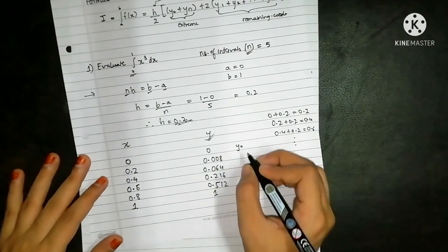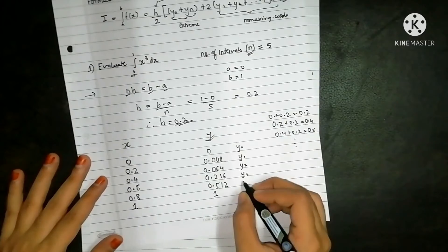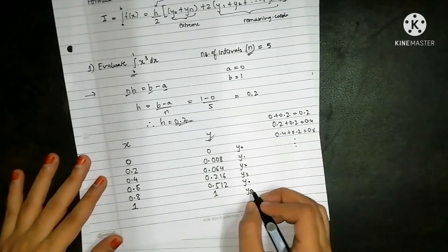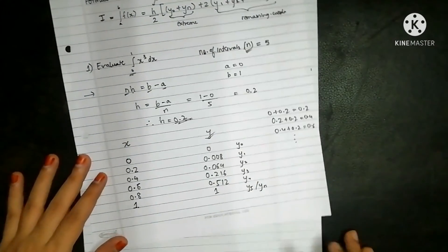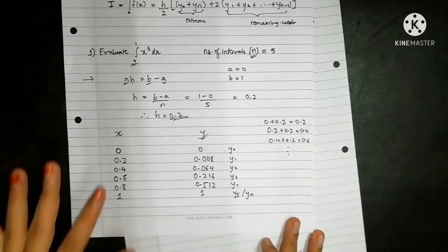This will be my y0, y1, y2, y3, y4 and y5, or you can write this as yn. Now substitute this in the formula.